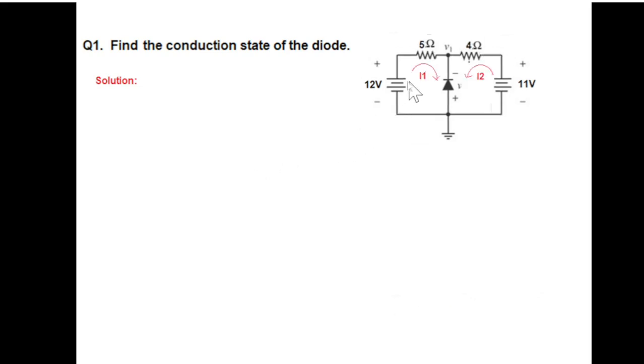The first thing we do is we mark the current directions. I'm calling this as i1 and i2 from the positive terminal of the battery.